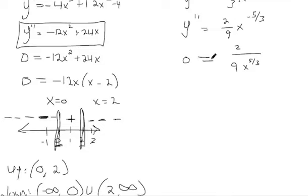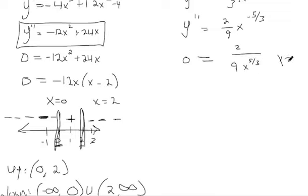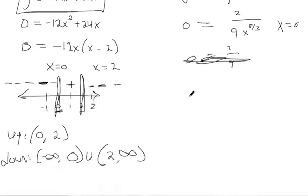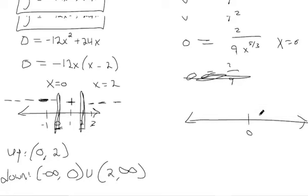With an inflection point, the same rule applies: set the second derivative equal to 0, and also find wherever the second derivative fails to exist — those are potential inflection points. x equals 0 is a point to analyze, and if you try to solve 2 over 9x to the five-thirds equals 0, you get a false statement. So there's only one potential inflection point: x equals 0.